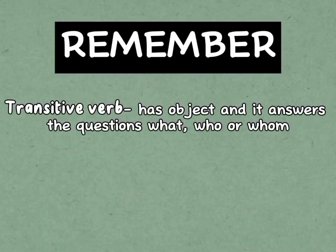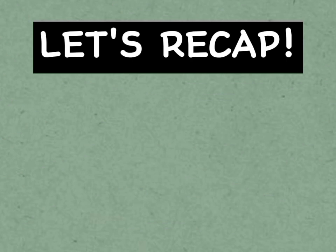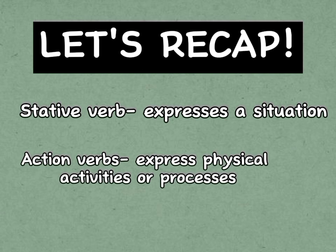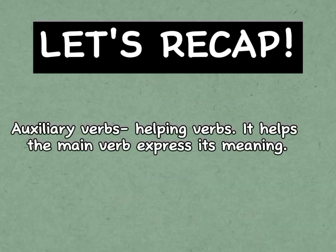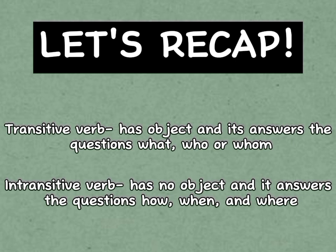Remember: transitive verbs have an object and answer the questions what, who, or whom. While intransitive verbs have no object and answer the questions how, when, and where. Let's quickly recap what we have learned today. We started with stative verbs that express a situation, and action verbs that express physical activities or processes. Then we talked about auxiliary verbs, also called helping verbs, which help the main verb express its meaning. And lastly, transitive verb has an object and answers what, who, or whom, while intransitive verb has no object and answers how, when, and where.